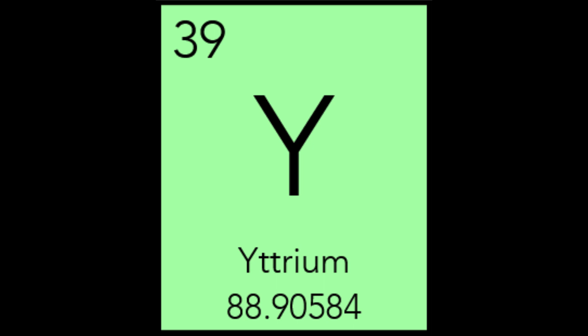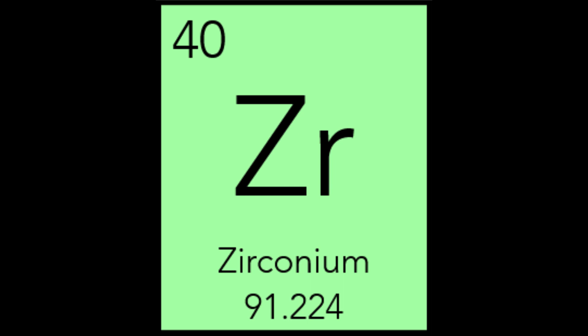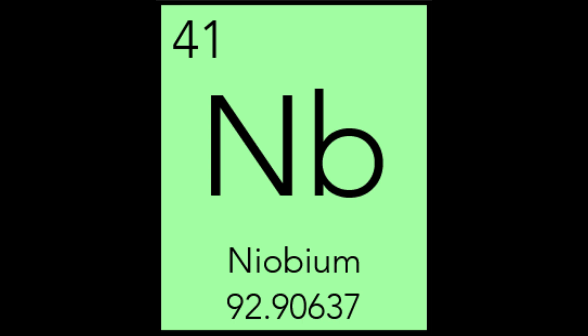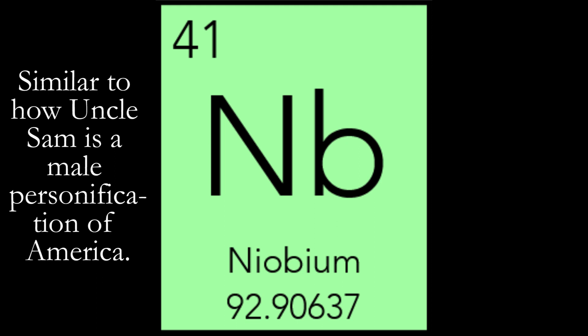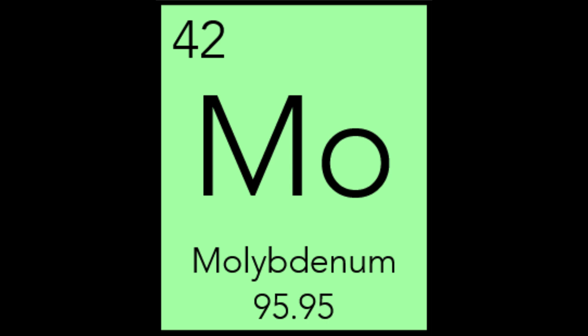Zirconium, Zr, gets its name from the German variant of the Persian word zargun, which means gold-like. Zirconium compounds are used in many space and aeronautic industries due to their resistance to heat, as well as in nuclear and medical applications. Niobium, Nb, is named after Niobe, the daughter of Tantalus in Greek mythology, due to their similarities. It is found in the mineral columbite, and so it is also sometimes unofficially known as columbium, after Columbia, the female personification of America. Molybdenum, Mo, gets its name from the Greek molybdos meaning lead, since its ores were mistaken to be ores of lead. 80% of molybdenum is used in high-strength steel alloys and super-alloys, and it was heavily used in armour plating as a substitute for tungsten during both world wars.